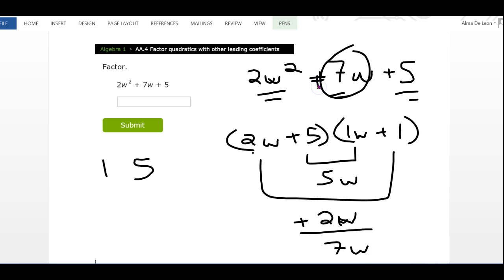So again, 2w times 1w is 2w², 5 times positive 1 is positive 5, and if I multiply the inside and the outside I end up with my middle term which is positive 7w. My answer is (2w + 5) times (1w + 1). You don't have to write the invisible one in front of the w, you could just write (w + 1).